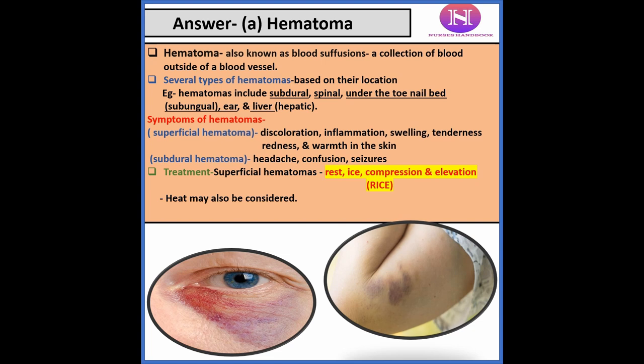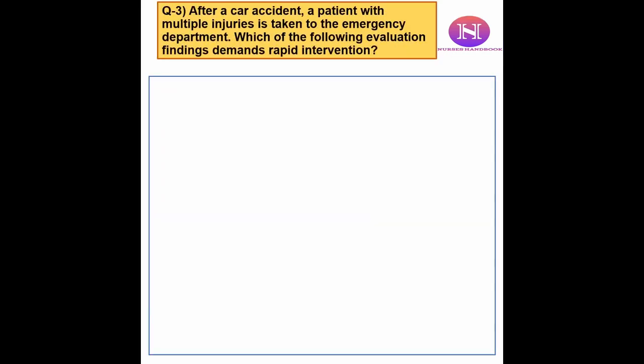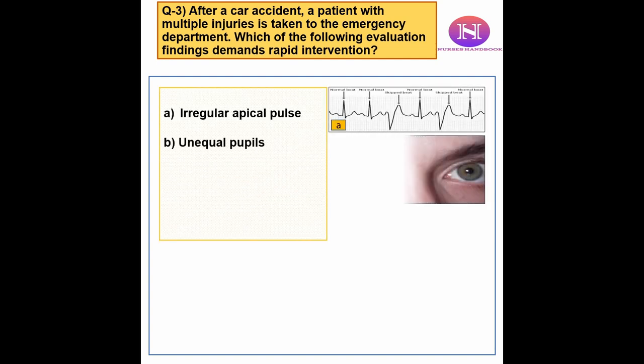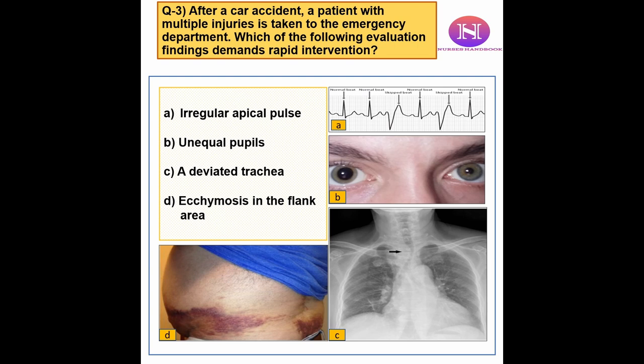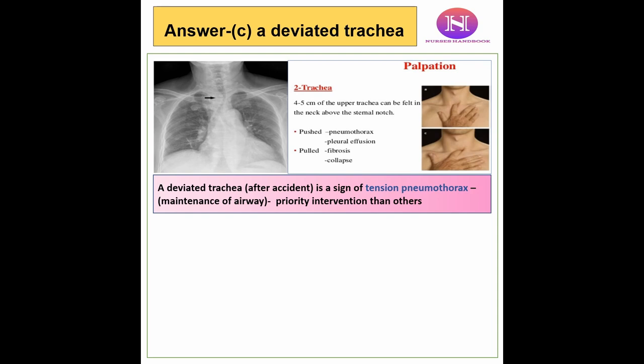Heat may also be given if prescribed. Question 3: After a car accident, a patient with multiple injuries is taken to the emergency department. Which of the following evaluation findings demands rapid intervention? a. Irregular apical pulse. b. Unequal pupils. c. A deviated trachea. d. Ecchymosis in the flank area. The correct answer is c — deviated trachea. A deviated trachea, especially after an accident, is a sign of tension pneumothorax, which is an emergency, and maintenance of the airway is the priority intervention.